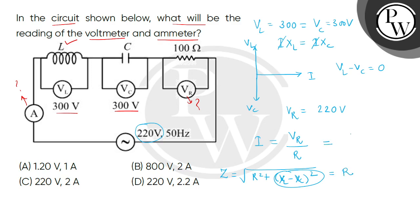When we substitute the values, VR is 220 and resistance is 100, so the current is 2.2 amperes. The correct answer is option D.